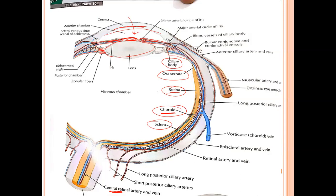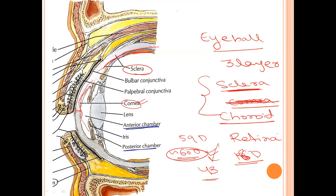The lens divides the entire eyeball into two parts: the vitreous chamber, which contains the vitreous humor, and the anterior portion called the aqueous chamber. The aqueous chamber is further divided by the iris into two parts: the anterior chamber — between the cornea and the iris — and the posterior chamber — between the iris and the lens. Both chambers contain aqueous humor and communicate via the pupil.